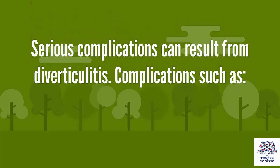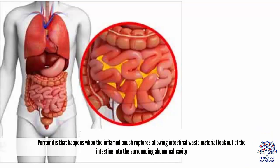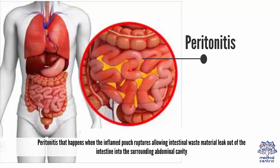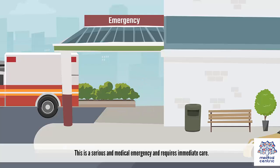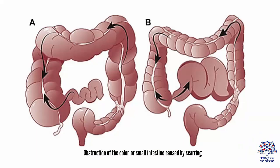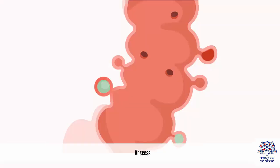Serious complications can result from diverticulitis. Complications such as peritonitis happen when the inflamed pouch ruptures, allowing intestinal waste material to leak out of the intestine into the surrounding abdominal cavity. This is a serious medical emergency and requires immediate care. Other complications include obstruction of the colon or small intestine caused by scarring, and abscess.